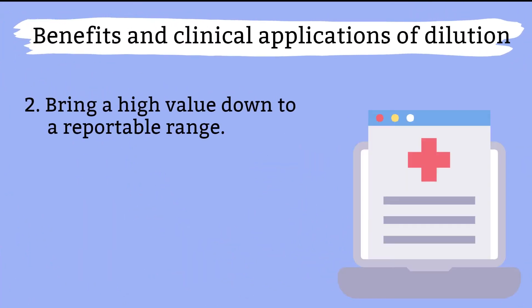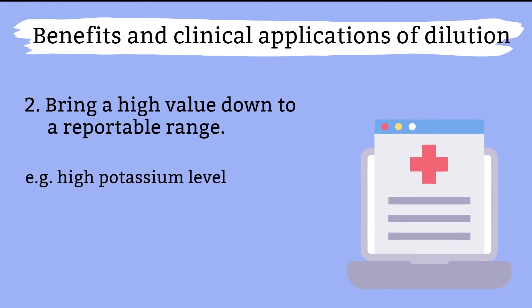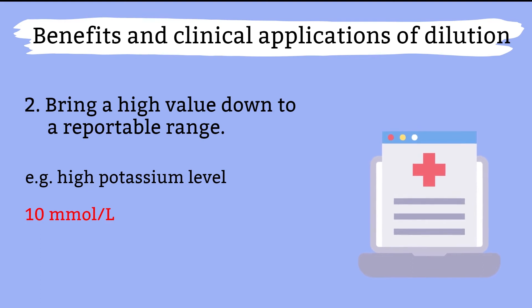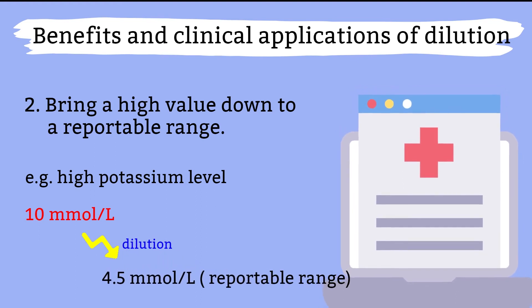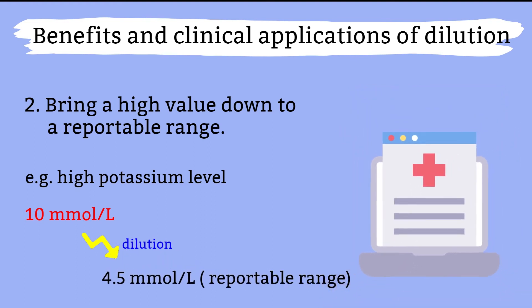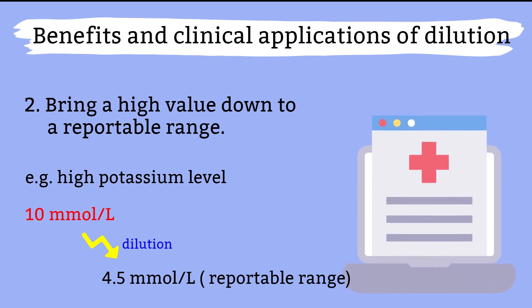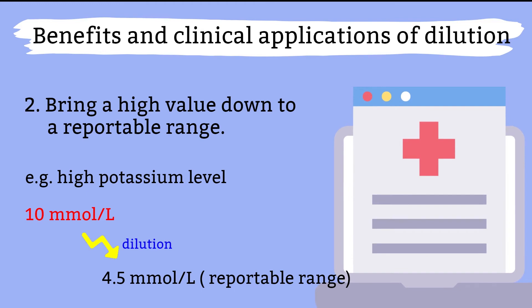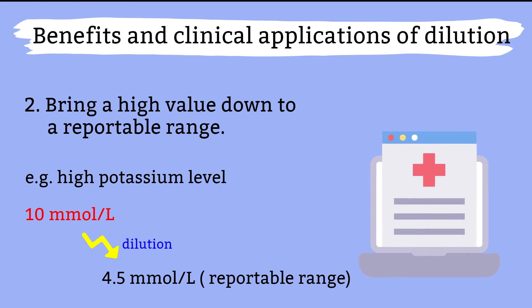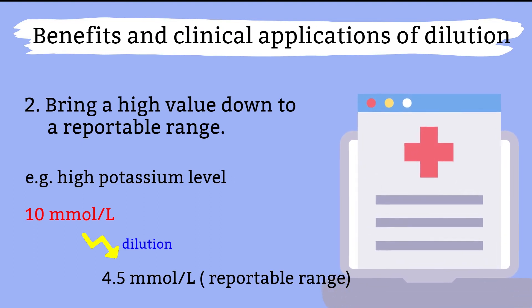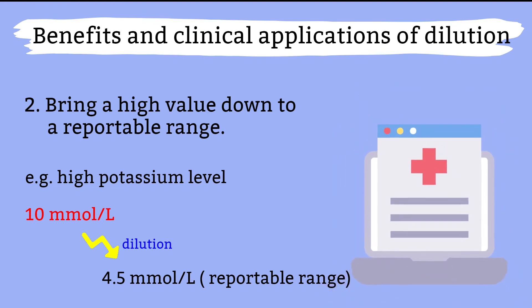Second, to bring high sample values down to a reportable range. This is when the patient test value is really high and goes above the reportable range that the instrument has been calibrated for. When this happens, we dilute the patient sample and repeat the test to bring the value into the reportable range. Make sure that after the results come out, you factor in the dilution factor before reporting the final results. As for how much to dilute — it depends on how high the value is above the reportable range. I usually start by diluting the sample in half, and that usually does the trick.